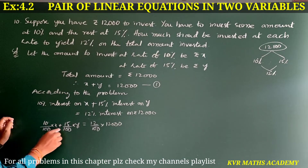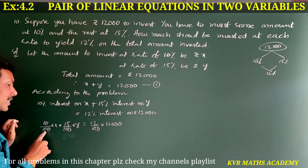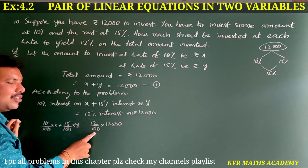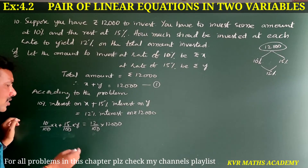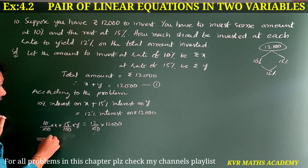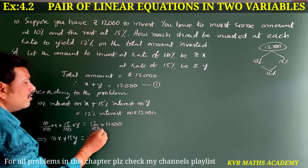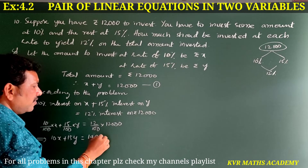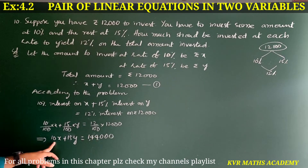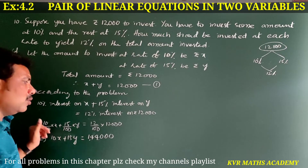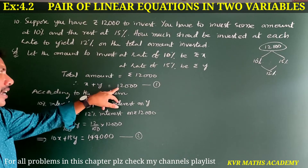On both sides the denominator is 100, so 100 cancels. The remaining part gives: 10X plus 15Y is equal to 144,000. This is equation number 2. We also have equation 1: X plus Y equals 12,000.